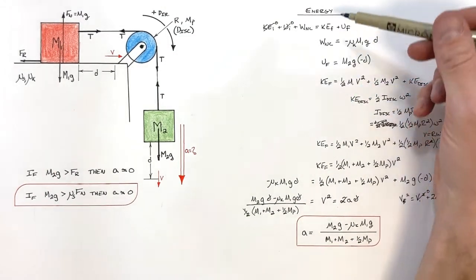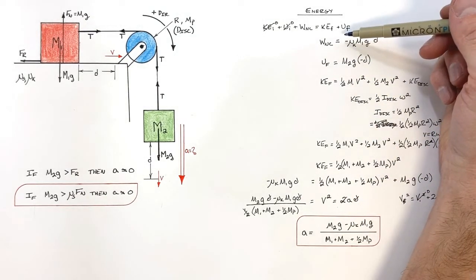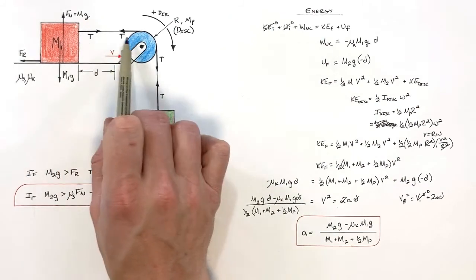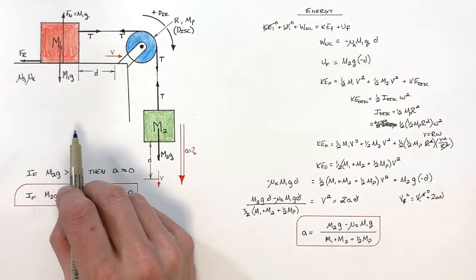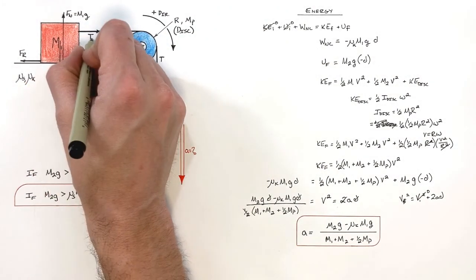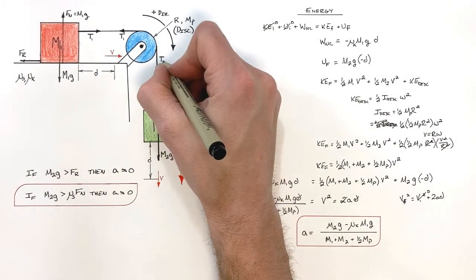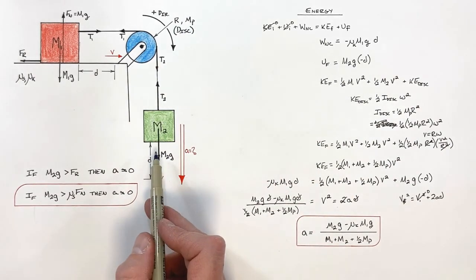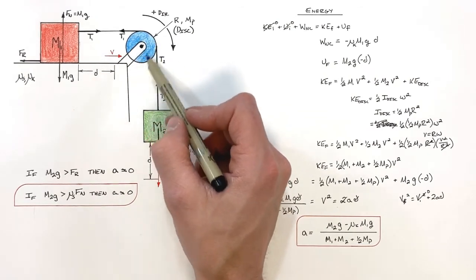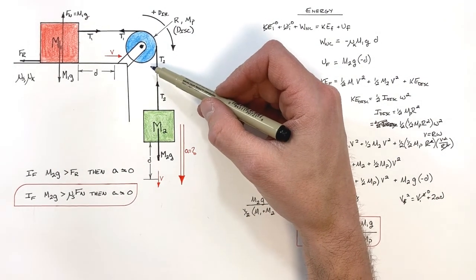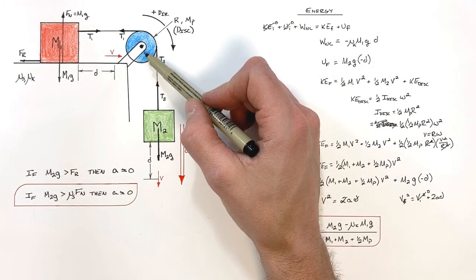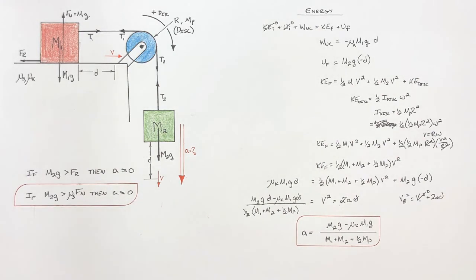One last point: in this energy approach the tensions were essentially ignored, but if you were to solve this using forces you'd have to recognize that the tension T₁ on the side connected to block one is not the same as the tension T₂ on the side connected to block two. If they were equal, the pulley would have no net torque and therefore no angular acceleration. So this is the horizontal Atwood machine including both friction and pulley mass — and that's all for now.